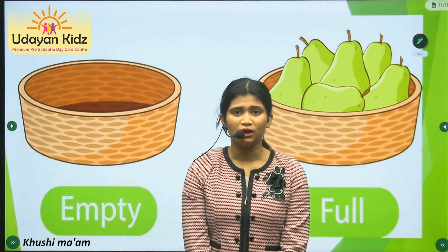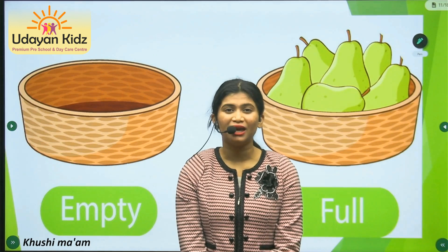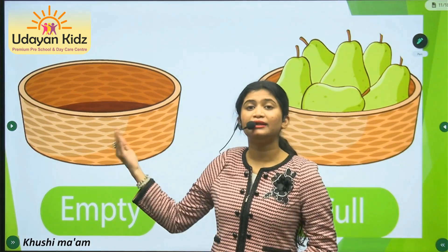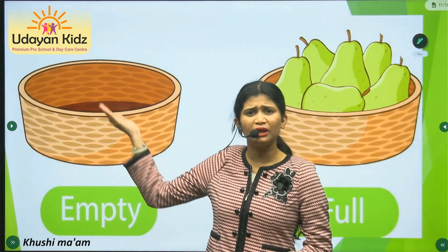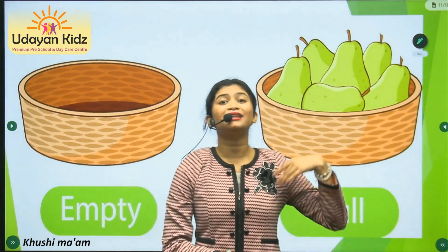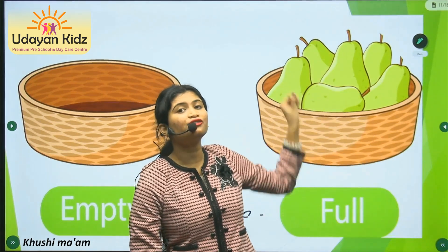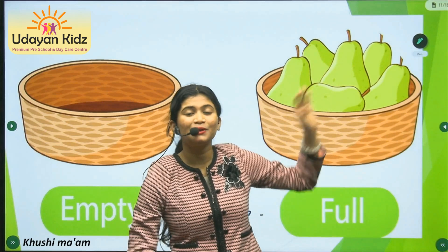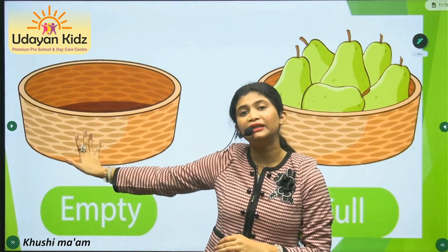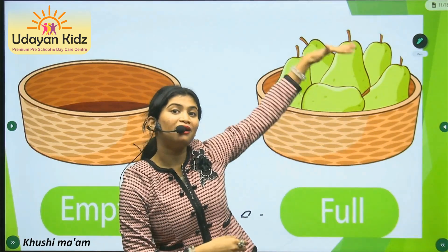Full ka matlab hota hai bhaara hua, and empty ka matlab hota hai khali. As you can see on the board, there is a basket which is empty — this basket has nothing inside. And then there is this basket which is full of pears. This basket is empty, khali. This basket is full, bhaara hua.